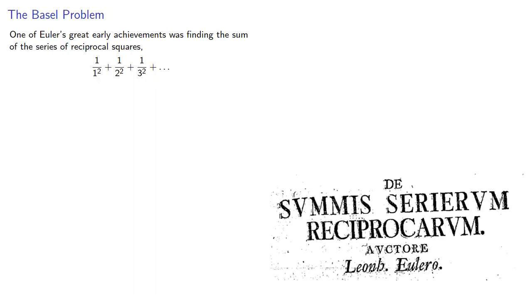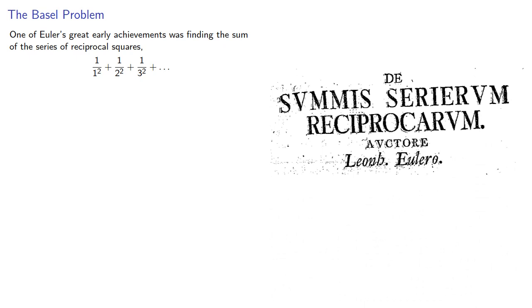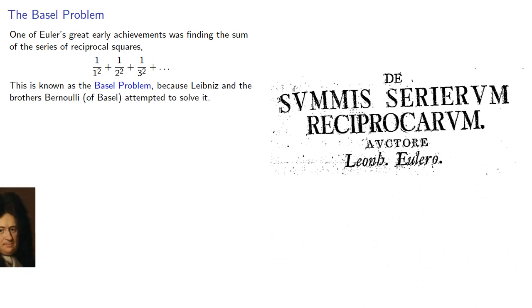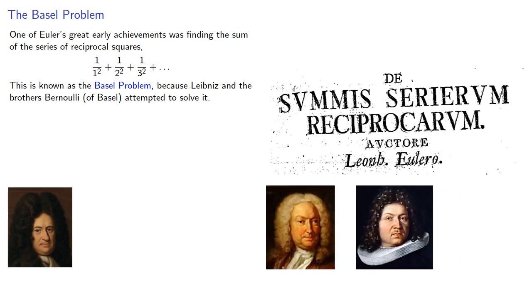One of Euler's great early achievements was finding the sum of the series of reciprocal squares. This is known as the Basel problem because Leibniz and the brothers Bernoulli of Basel attempted to solve it.